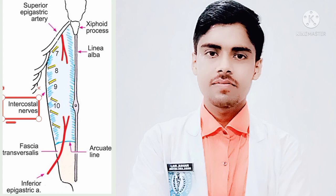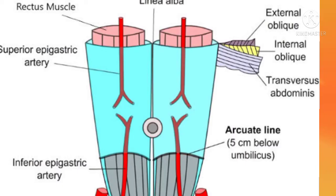Now we will discuss about the function of the rectus sheath. The main function of the rectus sheath is to check the rectus muscle during contraction and thus increase the efficiency of the muscle. It also maintains the strength of the anterior abdominal wall. This is all about the rectus sheath. I hope this video will be informative and knowledgeable for you. Please subscribe, like, and share my YouTube channel. Thank you for watching.